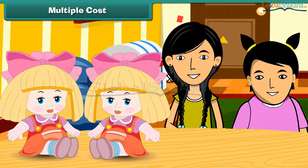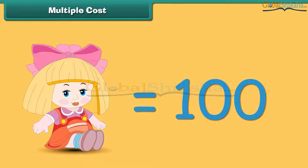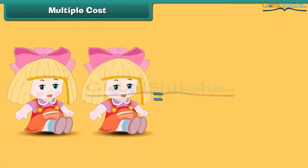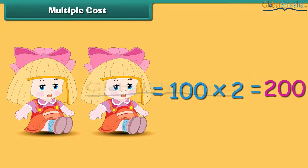Let us hear what these girls are talking. My mother bought these two dolls — one for me and one for my younger sister. The unit cost of a doll is 100 rupees. Do you understand the term unit cost? Unit cost is the cost of a single unit. So, the cost of a single doll is rupees 100. The multiple cost of two dolls is equal to rupees 100 multiplied by 2. The multiple cost of the dolls is rupees 200.